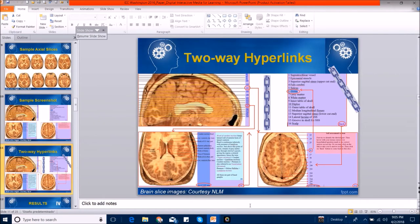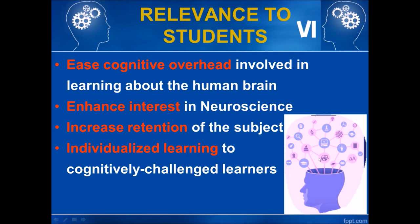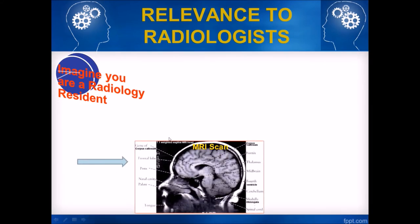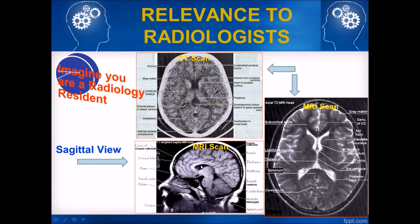This is the best way to study the human brain. The utility of such a program is: first, it eases the cognitive load on the student; it enhances the student's interest in neuroscience; it increases the retention of the subject; and it provides opportunities for individualized learning. As for relevance to clinicians and radiologists, most brain radiological images that a radiologist sees are either sagittal views — such as an MRI scan — or they are axial views, a CT scan or MRI. In order to interpret a transverse axial CT scan or MRI, or a sagittal MRI scan, the student should know what structures are visible in an axial view or a sagittal view — that is the whole purpose of this program.